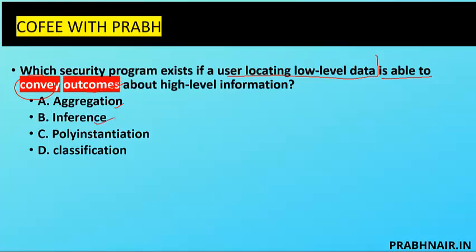Poly instantiation is a control — it is used to create two versions of the same information. Classification is about how we store data. The answer here is inference attack, because the question describes a user deriving high-level outcomes from low-level data using their own reasoning.